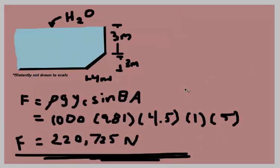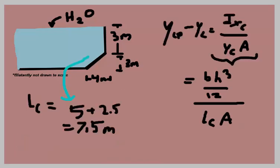So now that we have our variables we can plug our numbers in. So rho equals 1000, your G equals 9.81, Y sub C is 4.5, sine theta is 1, your area equals 5. And when you solve all that out in the calculator you get 220,725 newtons as your hydrostatic force.